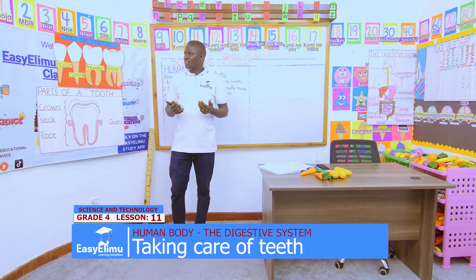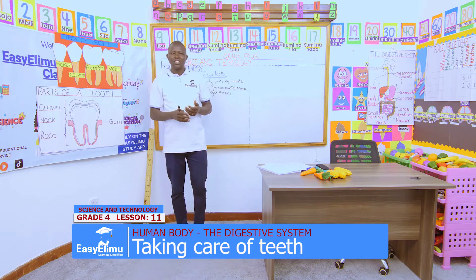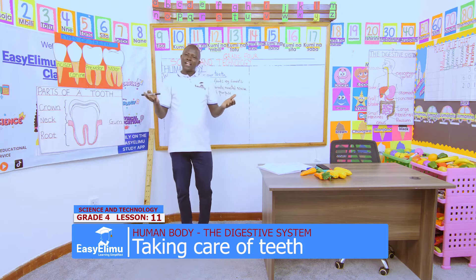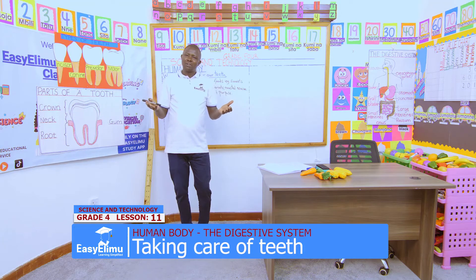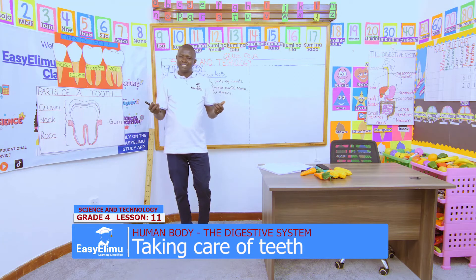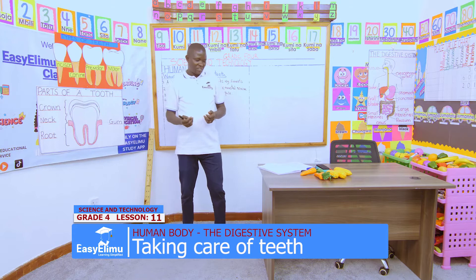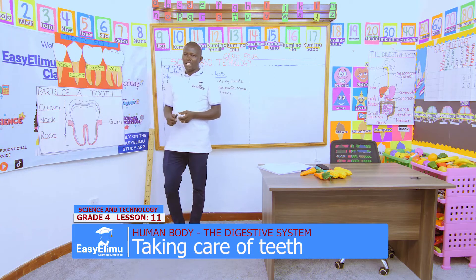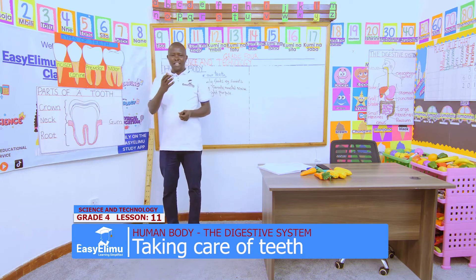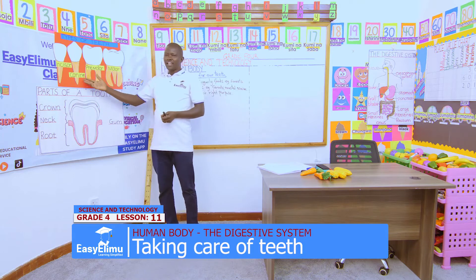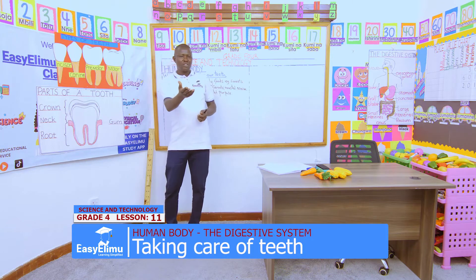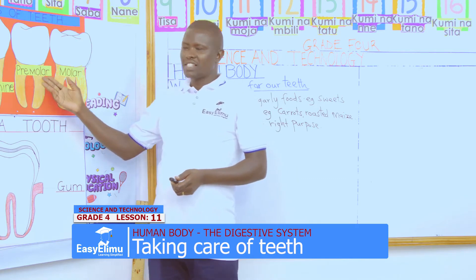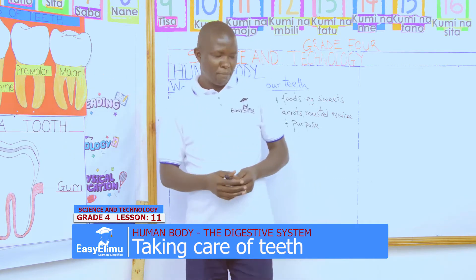In our previous lesson, we looked on the types of teeth and their functions. Who can remind us the types of teeth we looked at? From you John, we said we have incisors as you can look on them on our chart. And you Mary, we have canines. And you Tom, we have premolars. And the last one is molars.